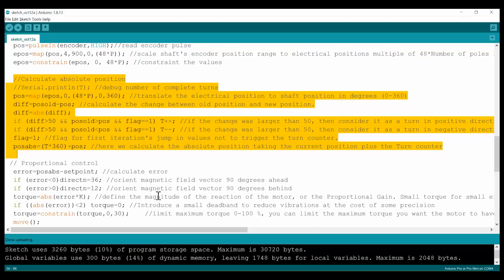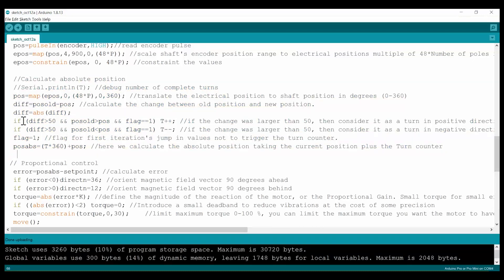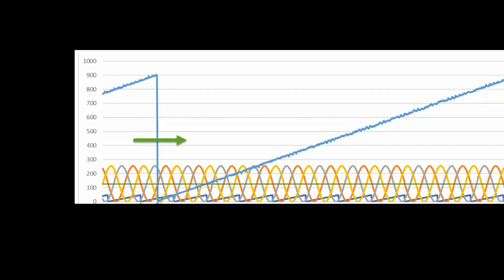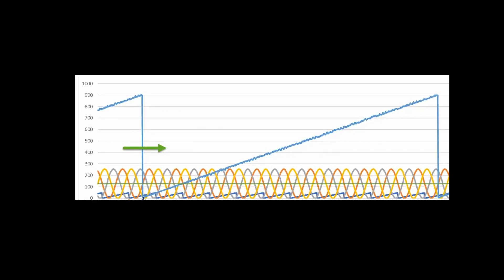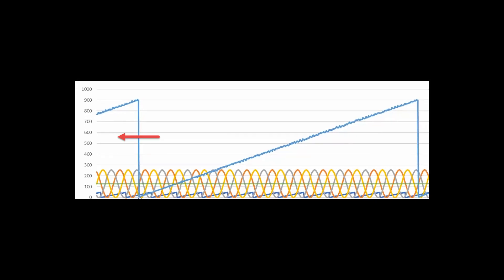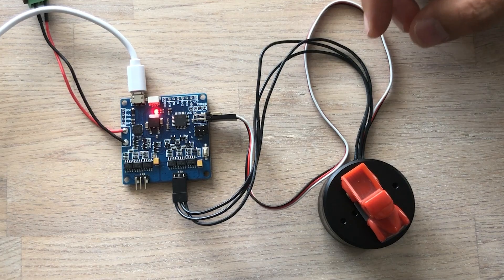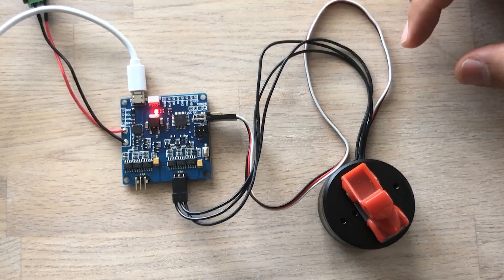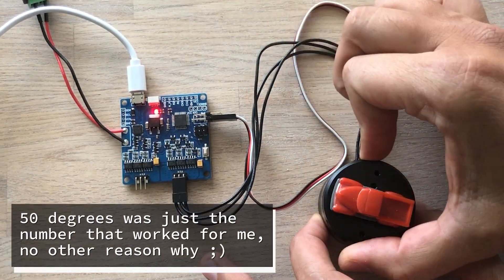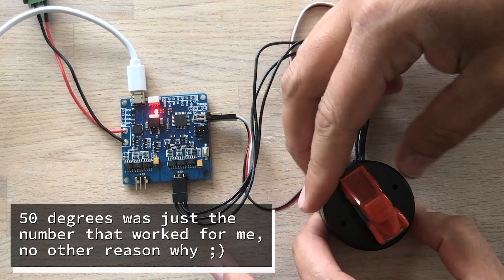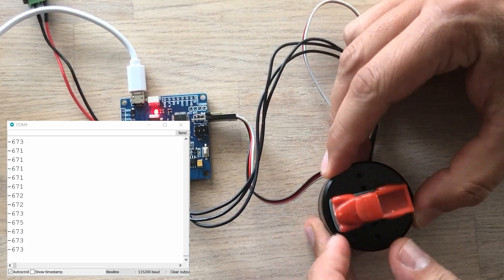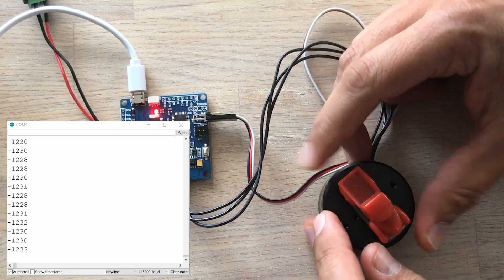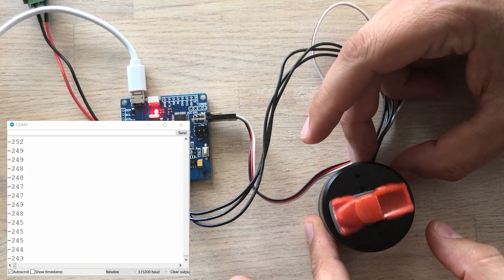To solve this issue, I created a turn counter that is activated every time a large jump in position is detected. As our position is mapped between 0 and 359 degrees, completing a turn will cause a jump from a position of 359 degrees to a position of 0 degrees when turning in one direction and the opposite when turning the other direction. So, I wrote some code that detects jumps in rotor position larger than 50 degrees. When a large jump is detected, it causes the turn counter to increase or decrease. The new code fixes the problem seen earlier. It accounts for the number of turns and keeps track of the absolute position of the motor.